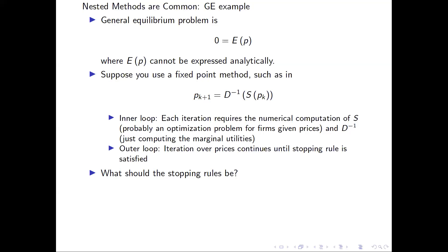So the question is, you have two numerical issues going on here. First, the numerical part of computing each S of P — you're going to have to have a stopping rule. You're not going to get exact solutions. And then the other iteration, the outer loop where you iterate on prices — that's also a numerical procedure, and you're going to have to have a stopping rule for that.